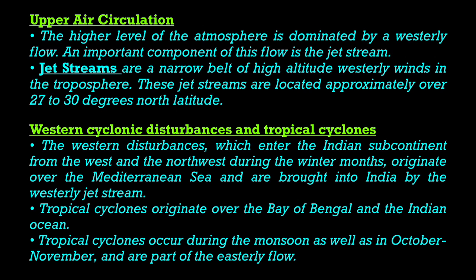The third factor is Western Cyclonic Disturbances and Tropical Cyclones. Western disturbances enter the Indian subcontinent from the west and northwest during winter months, originating over the Mediterranean Sea and brought to India by the westerly jet stream. The Mediterranean Sea is near the boundary of Africa and Europe, to the west of India. Tropical cyclones originate over the Bay of Bengal and the Indian Ocean, occurring during the monsoons as well as in October and November, and are part of the easterly flows.